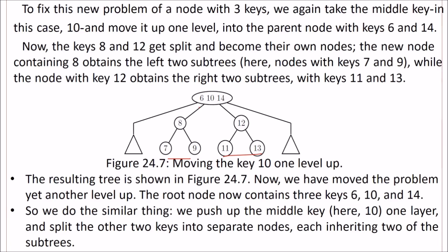So the keys 8 and 12 become their own self-node, and the new node containing 8 has two subtrees: the left subtree containing 7 and 9, while the node 12 obtains the right two subtrees, 11 and 13. This is the resulting tree. Now we have moved the problem to another level. The root node now contains 6, 10, and 14.